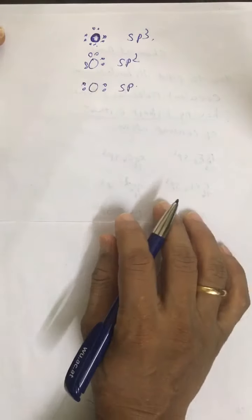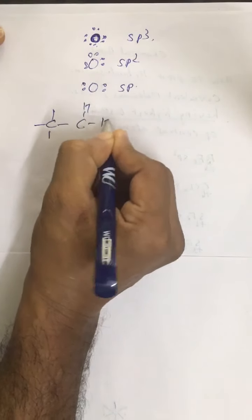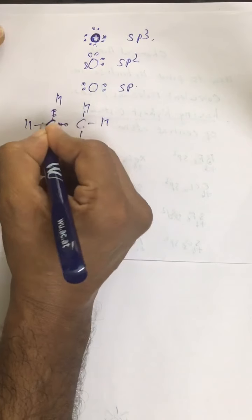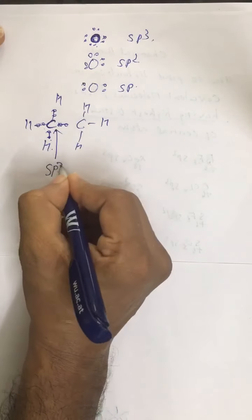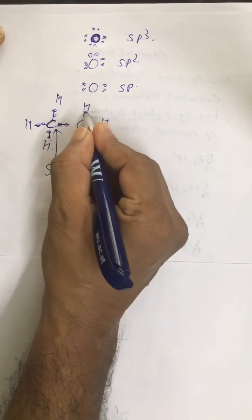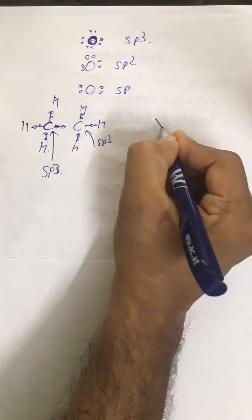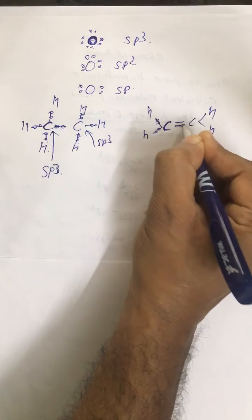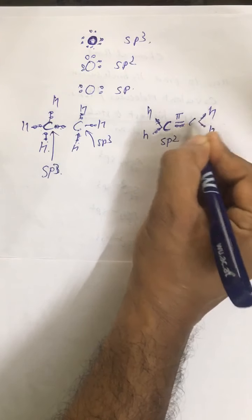A singly bonded atom is sp3 hybridized. In ethane, each carbon is surrounded by four electron pairs, so it is sp3 hybridized. In ethene, each carbon is surrounded by three electron pairs — the pi electron pair is not included — so both carbons are sp2 hybridized.